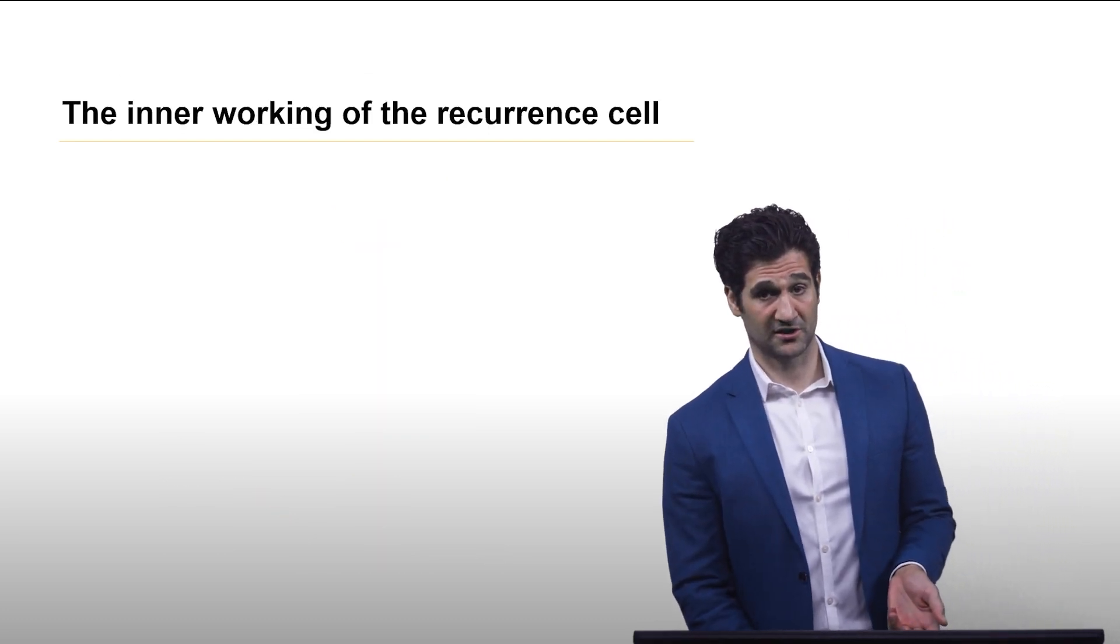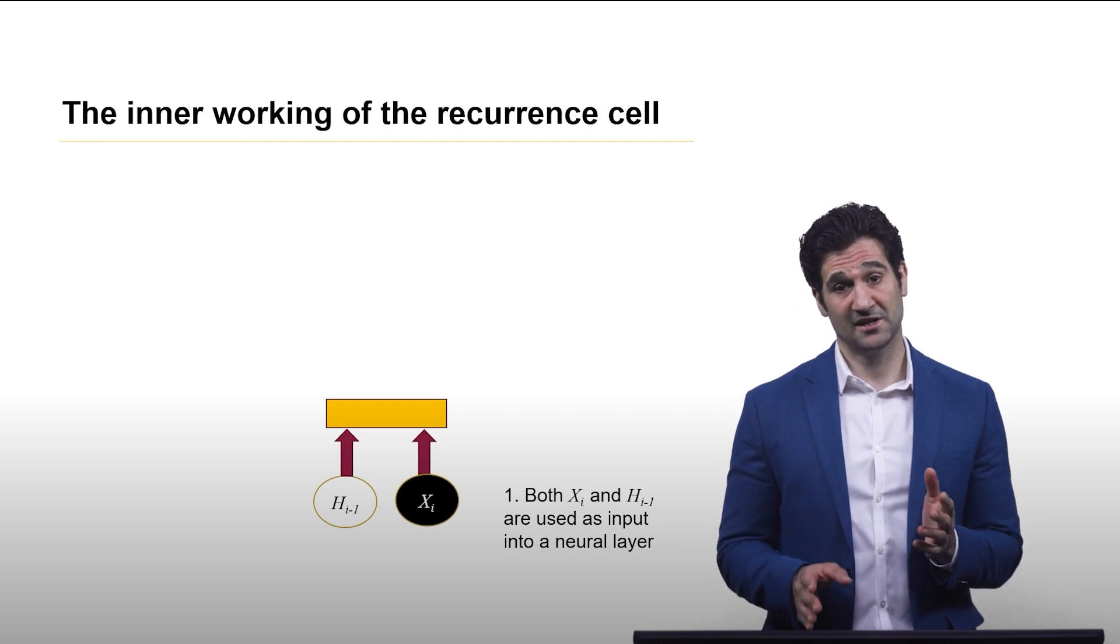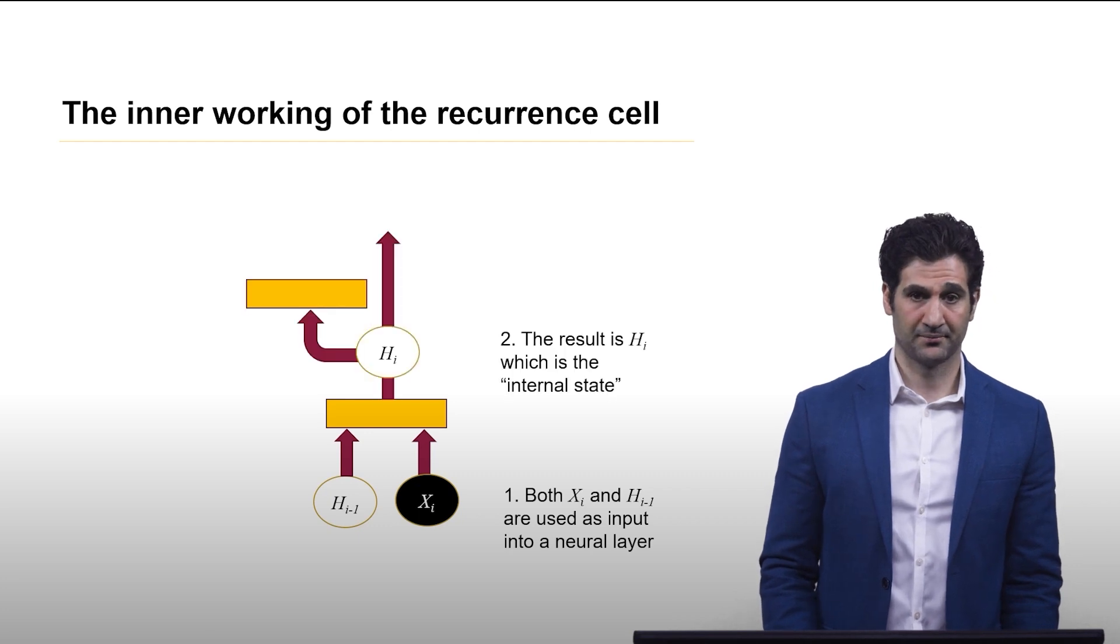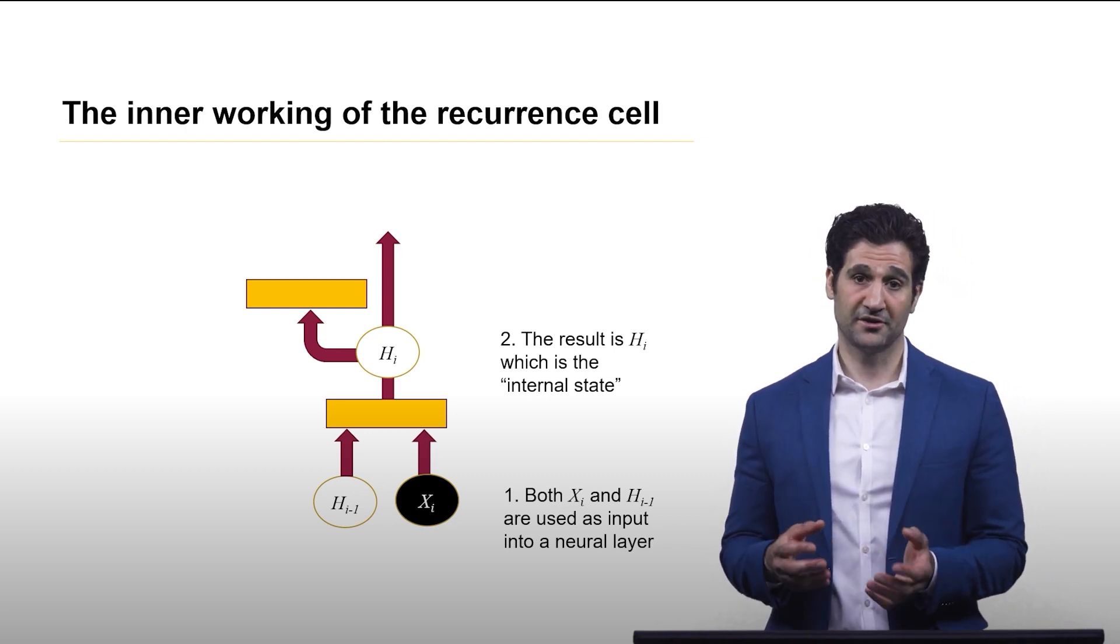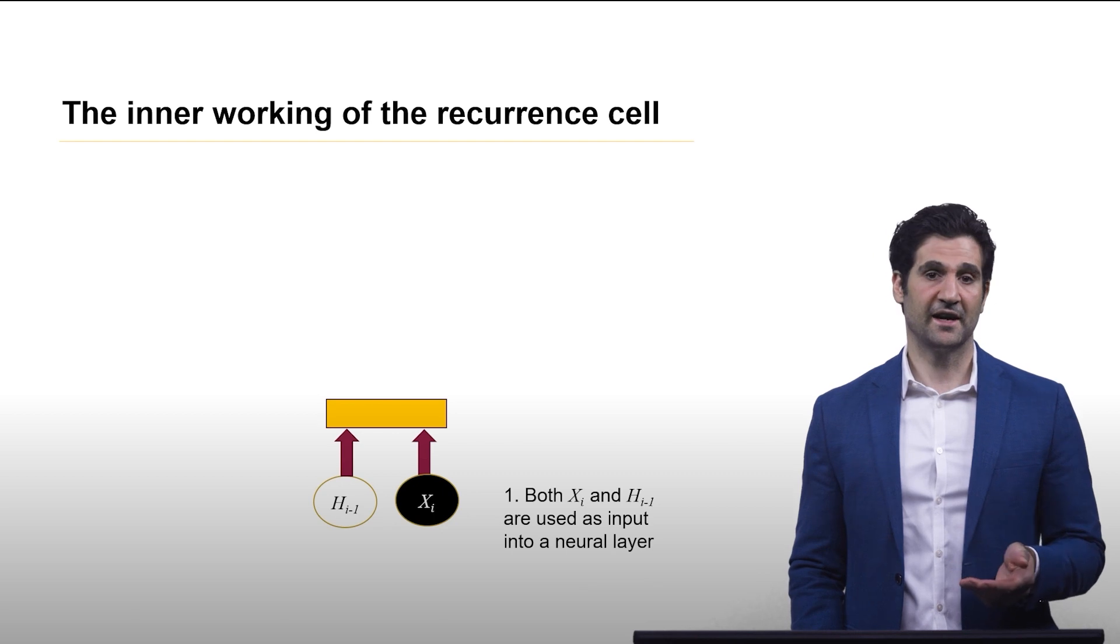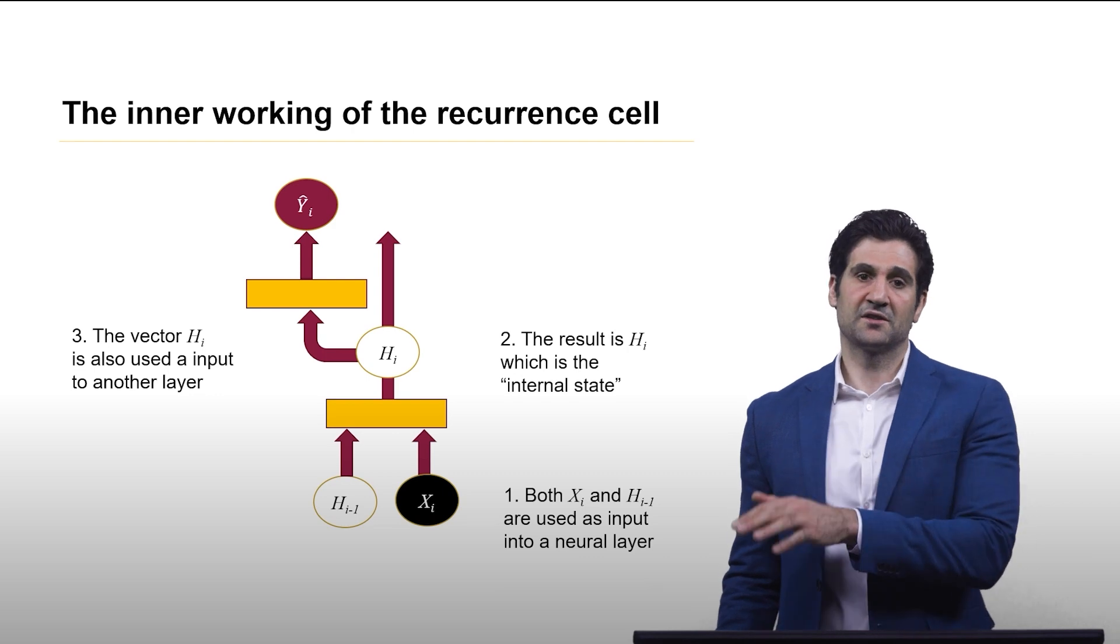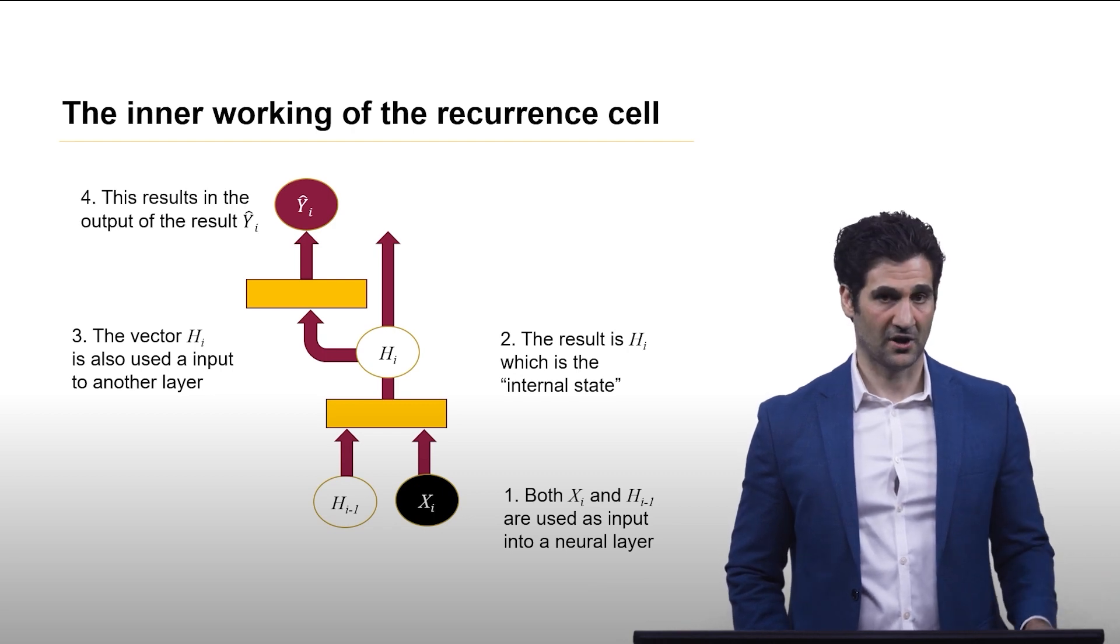So let's look at the inner workings of how this works for a single recurrent cell. As input, we can think of the input to a recurrent cell as a concatenation of two vectors. We have xi and we have h of i minus 1. And we have a layer that considers both of them. Now the output of that layer is now hi. That's our internal state. So that internal state will both be output to the next recurrent unit, but it's input to another layer inside this unit. And that layer will give us y hat. So this is the output for the current layer. So notice that hi gets passed on to the next recurrent cell, but also is used as output for the result of this cell.